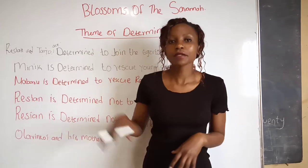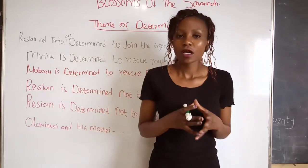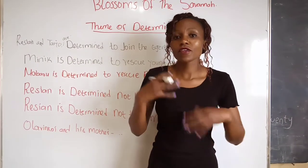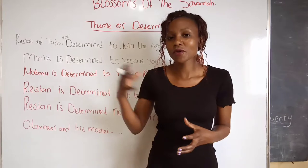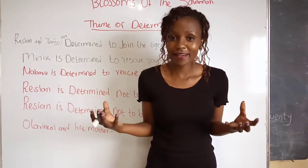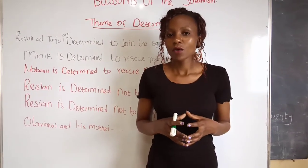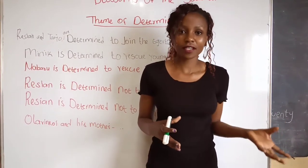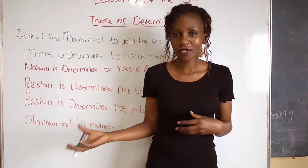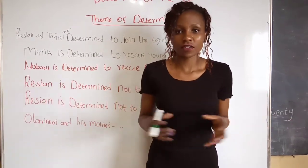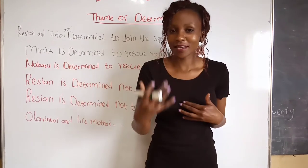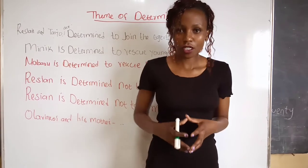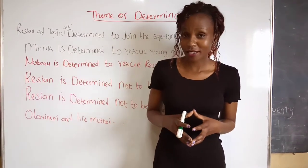Those are some of the points supporting the theme of determination. There are more points — for example, Resian and Tayo are determined to meet their role model Minik Karei, and Oloisudori is determined to marry Resian. If you see any other evidence from the book that supports determination, just let me know. That is the end — thank you for watching, bye bye, see you next time.